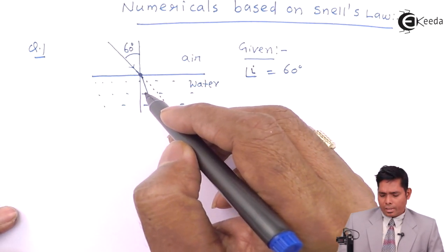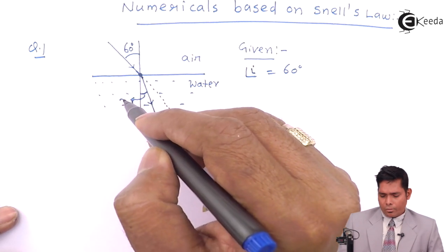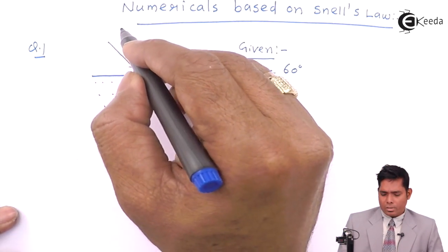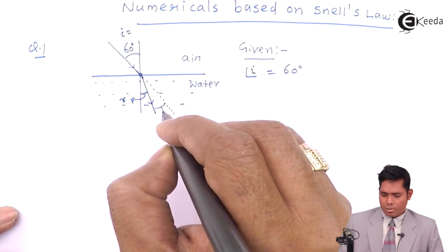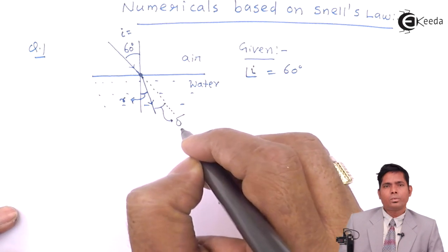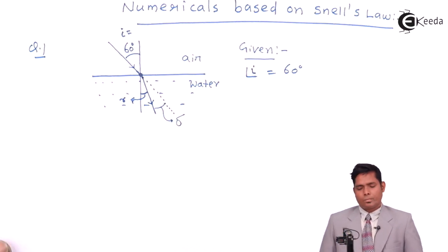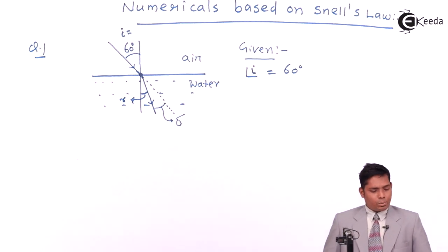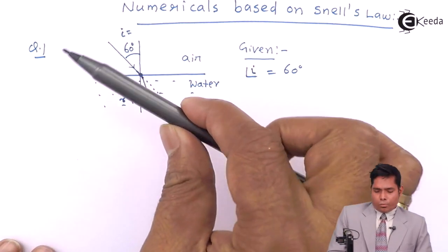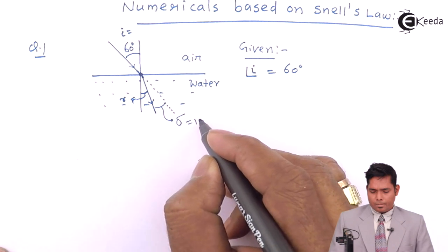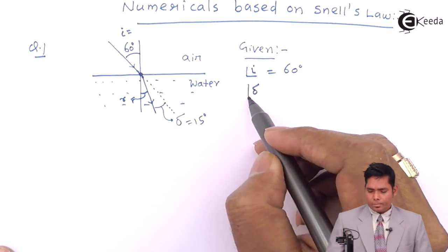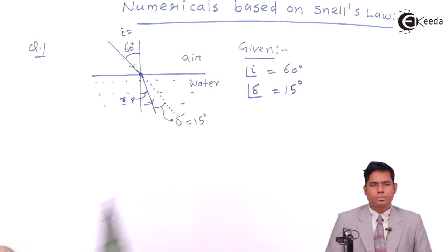By what angle? This angle is called angle of refraction. This angle is called angle of incidence. This angle is called angle of deviation. It says that it is deviated through 15 degrees towards the normal. So instead of going this direction, it bends towards the normal by 15 degrees. So this is 15 degrees, this is the angle.